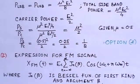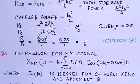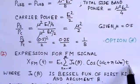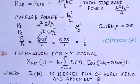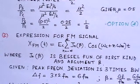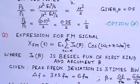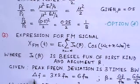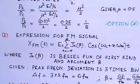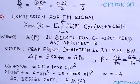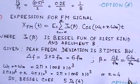For the second part, the FM signal is expressed as: x_FM(t) = Ec · Σ(n = −∞ to ∞) Jn(β) · cos(ωc + nωm)t, where Jn(β) is the Bessel function of the first kind with argument β. The peak frequency deviation is 3 times the AM bandwidth, which is 2fm, so the deviation equals 6fm. Therefore, the modulation index β = ΔF/fm = 6fm/fm = 6.